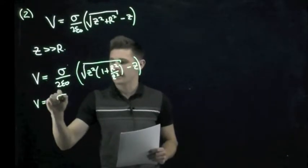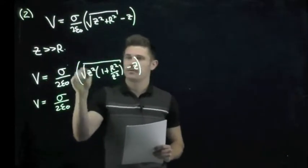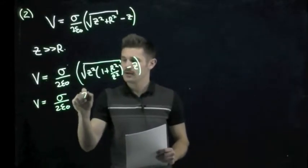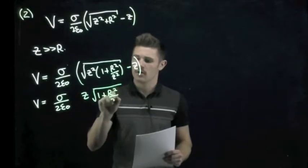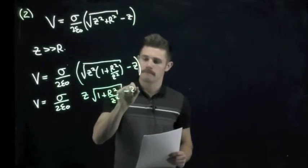I can then pull that outside of the square root. And remember the square root of z squared is just z. So we have z times the square root of one plus r squared over z squared minus z.